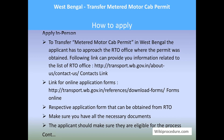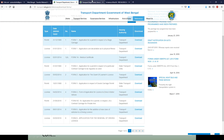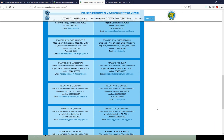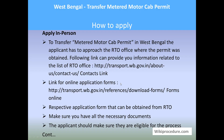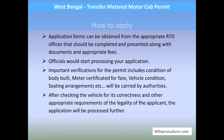The transfer of metered motor cab permit can be done at the RTO office concerned for your area in West Bengal. If you don't know the address of the local RTO office, click the contact link provided here to reach the contact page of the West Bengal State Transport Portal, which lists RTO offices — select the appropriate one for your area. Application forms can be downloaded using the link provided or obtained from the RTO office directly. Make sure you have all required documents, as missing even one document will result in rejection. Applicants should also ensure they are eligible for this process.